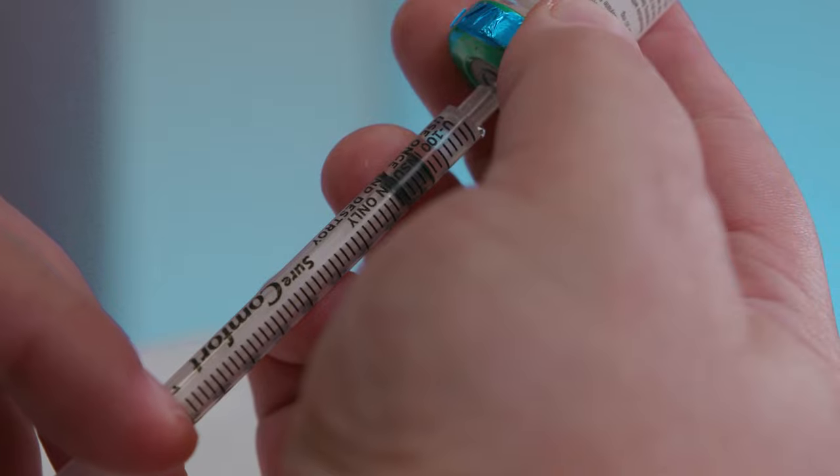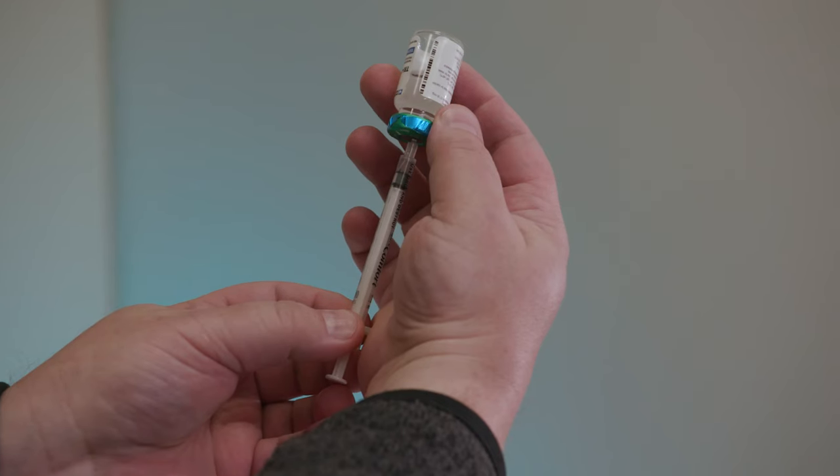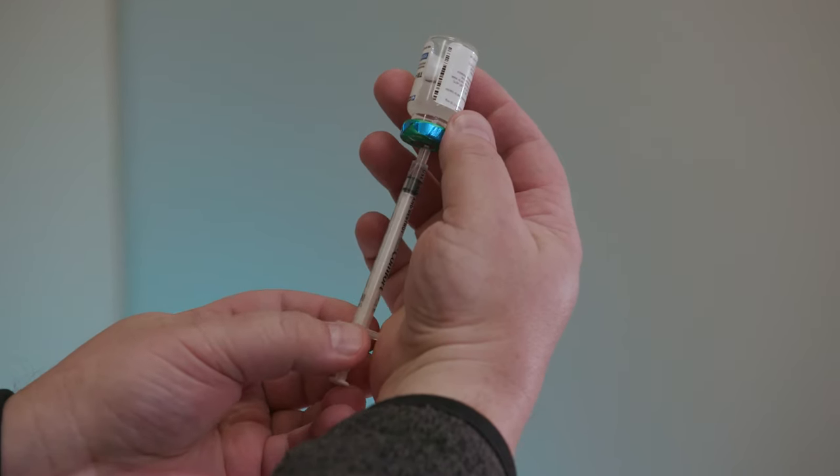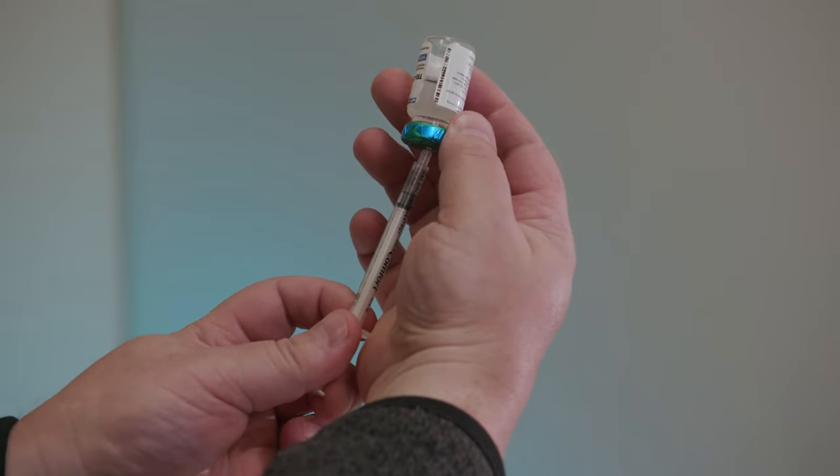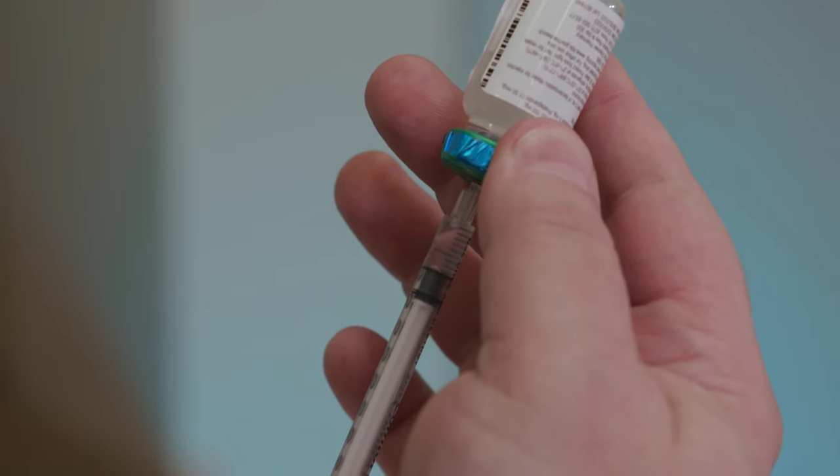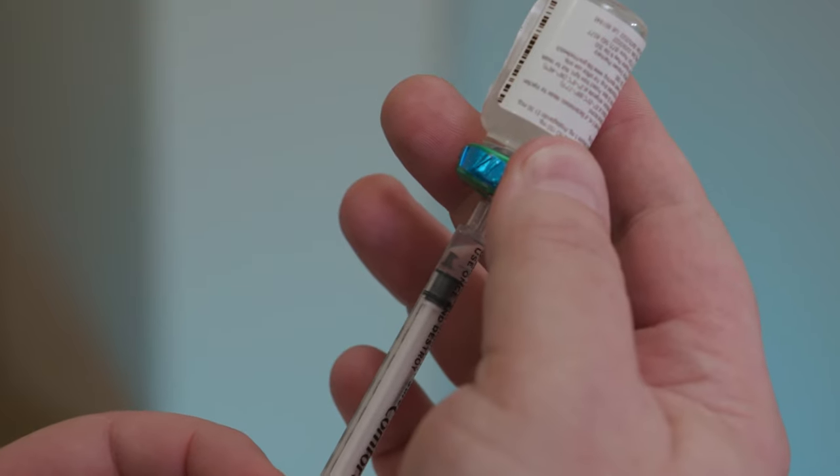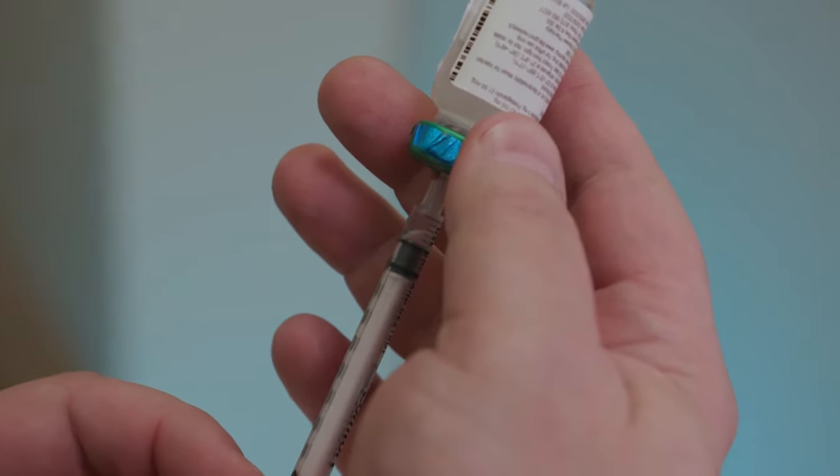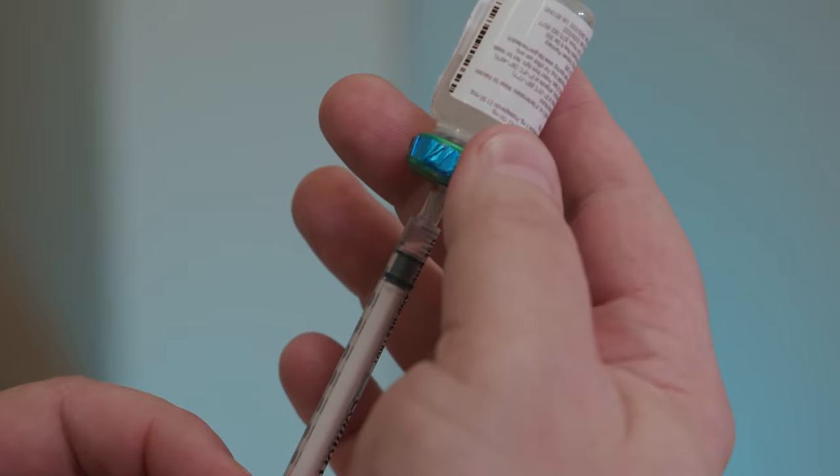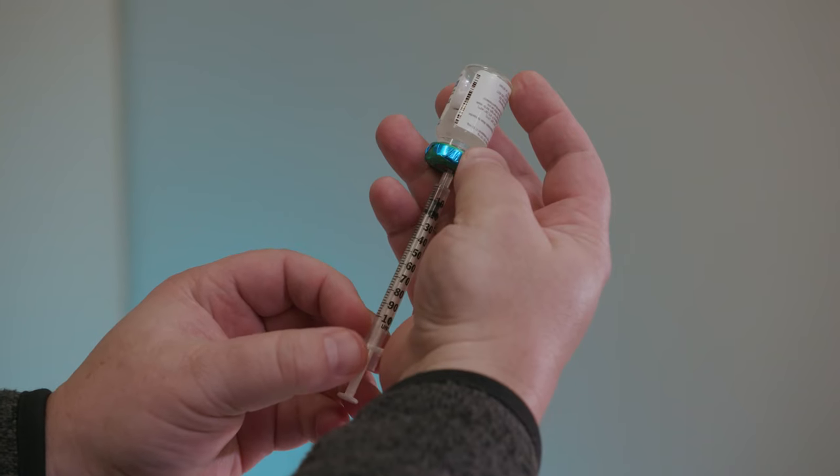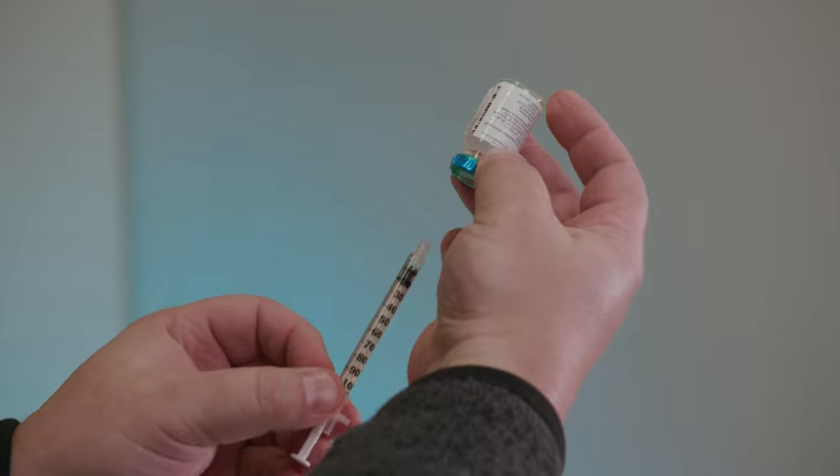Without taking the needle out of the vial, look for air bubbles in the syringe. If you see any, pull more medication into the syringe. Then, slowly push the air bubbles and extra medication back into the vial. Check the amount of medication in the syringe to make sure it's the right dose. When you have the right dose, pull the needle out of the vial.